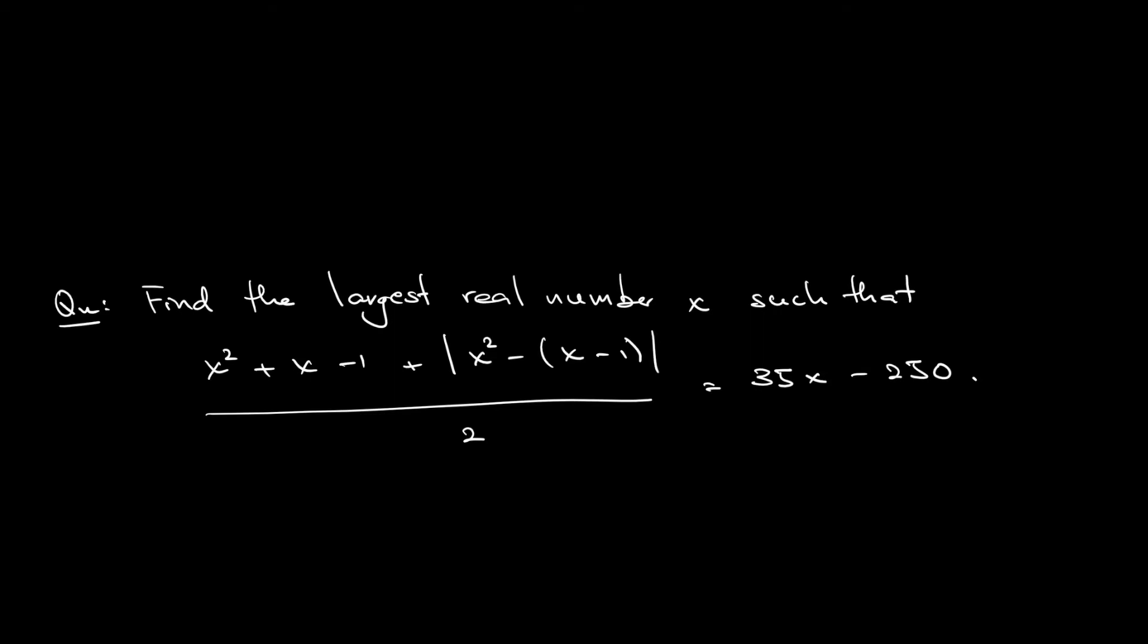Find the largest real number x such that this equation: a fraction of x squared plus x minus 1 plus absolute value of x squared minus bracket x minus 1 over 2 is equal to 35x minus 250. This is a type of algebra question. How to solve this equation?